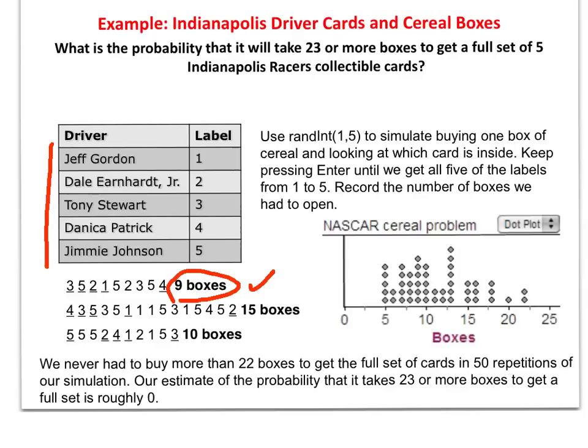So I'm going to do it again. And this time, if you notice here, it took 15 boxes. And then I do it again. And there's 10 boxes. So I'm going to do this lots and lots of time, counting how many boxes I need to buy before I get all five of them. And so I made a dot plot. This is using Fathom, which is a program I use a lot in class. But you can see here that we did this 50 times, 50 repetitions. And taking 23 or more boxes never occurred. We always, out of the 50 times, was able to get all five in fewer than 23 times. In fact, the most we had was 22. So our percentage here would be 0% in our simulation out of 50 times. We never required us to buy 23 boxes to get all five of them.